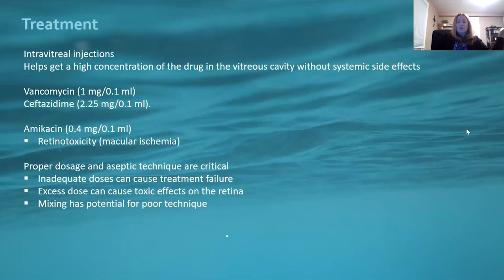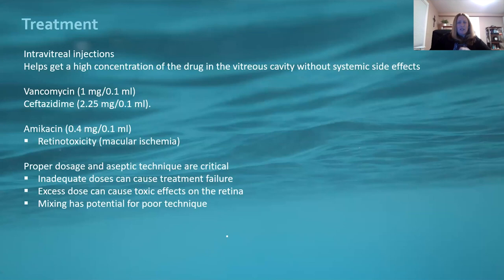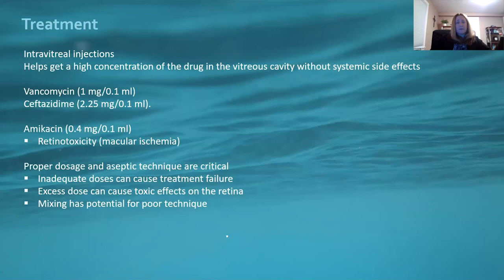Treatment for endophthalmitis is intravitreal injection, delivering a high concentration of drug in the vitreous cavity without systemic side effects. You can use vancomycin, ceftazidime, or amikacin — though amikacin is less commonly used now due to the risk of macular ischemia. The two drugs of choice seem to be vancomycin and ceftazidime. If you're mixing your own, please use the proper dose and aseptic technique. An inadequate dose can cause treatment failure; an excess dose can cause toxic effects on the retina. Poor aseptic technique in an already infected eye will certainly not help.